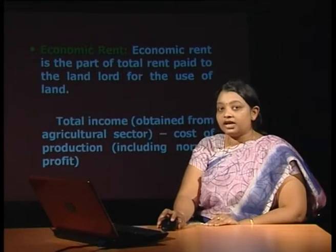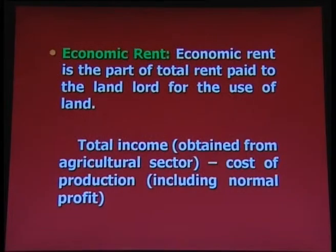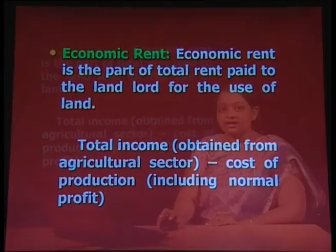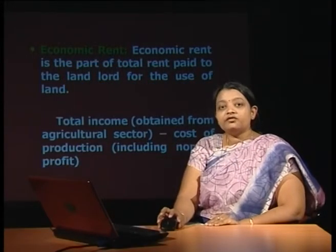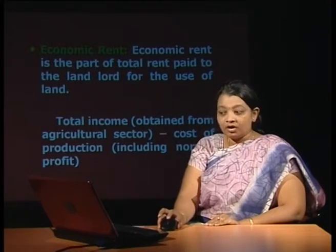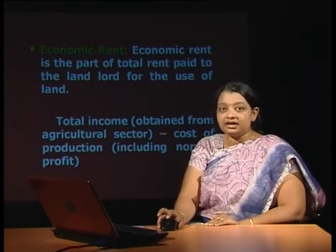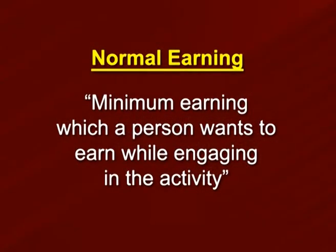When we talk about economic rent, it is the part of total rent paid to the landlord for the use of the land. It can be obtained by deducting cost of production from total income. Total income means income obtained by the owner from the agricultural sector. Cost of production includes normal earning, which means the minimum earning a person wants to earn while engaging in the activity.